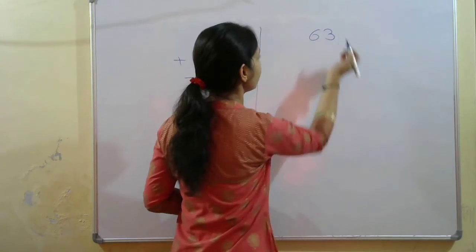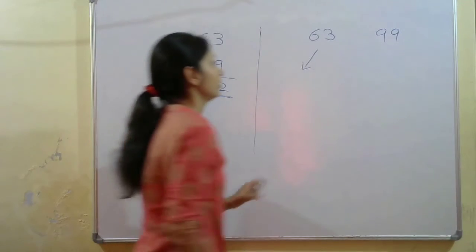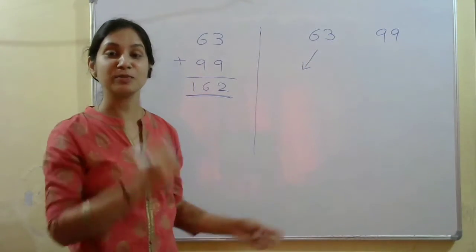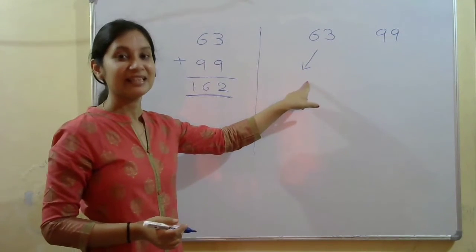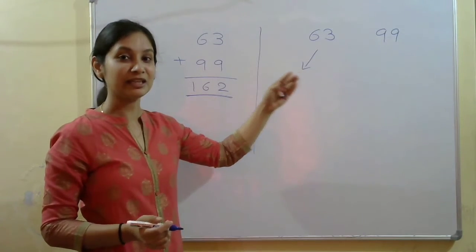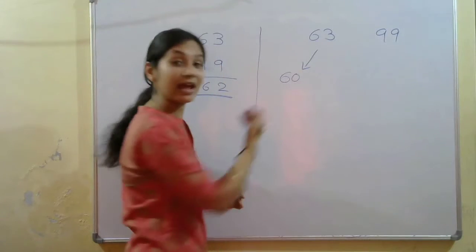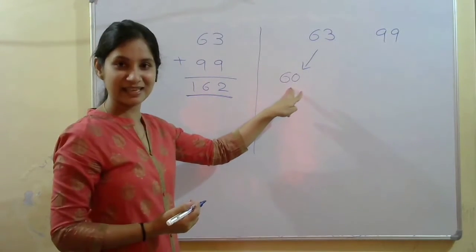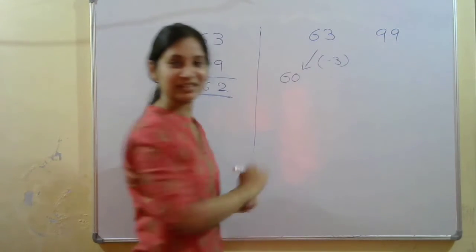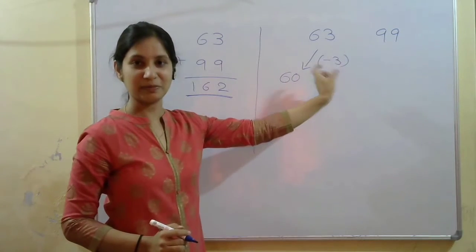For 63, I find the nearest multiple of 10. Since 63 is less than 65, I go to 60. Here I subtracted 3 from 63 to get 60 — so please note the sign as minus 3. For 99, the nearest multiple of 10 is 100, and I added 1. Please keep that in mind.